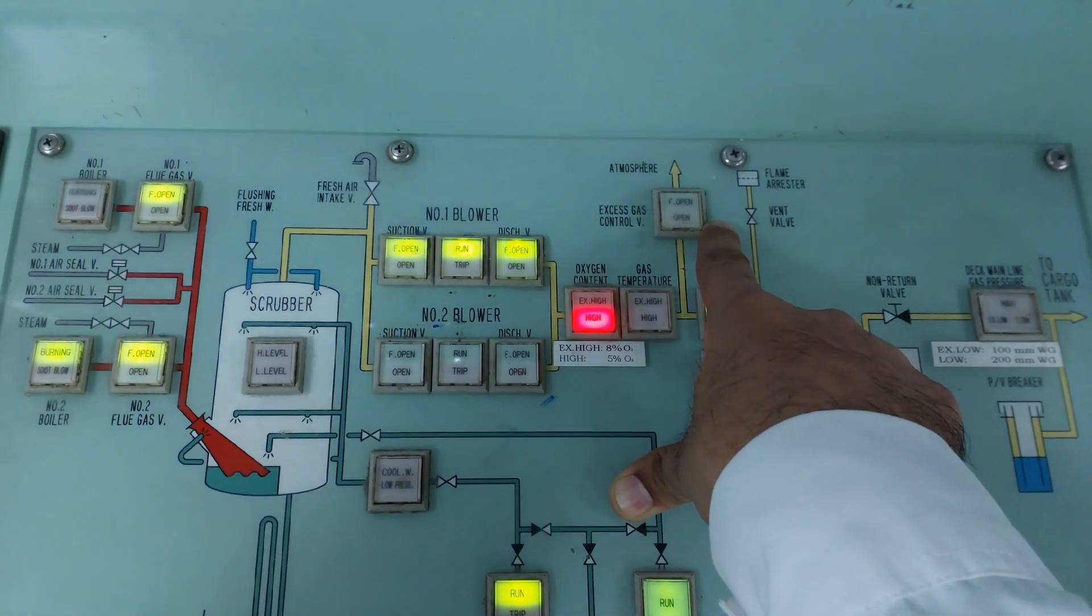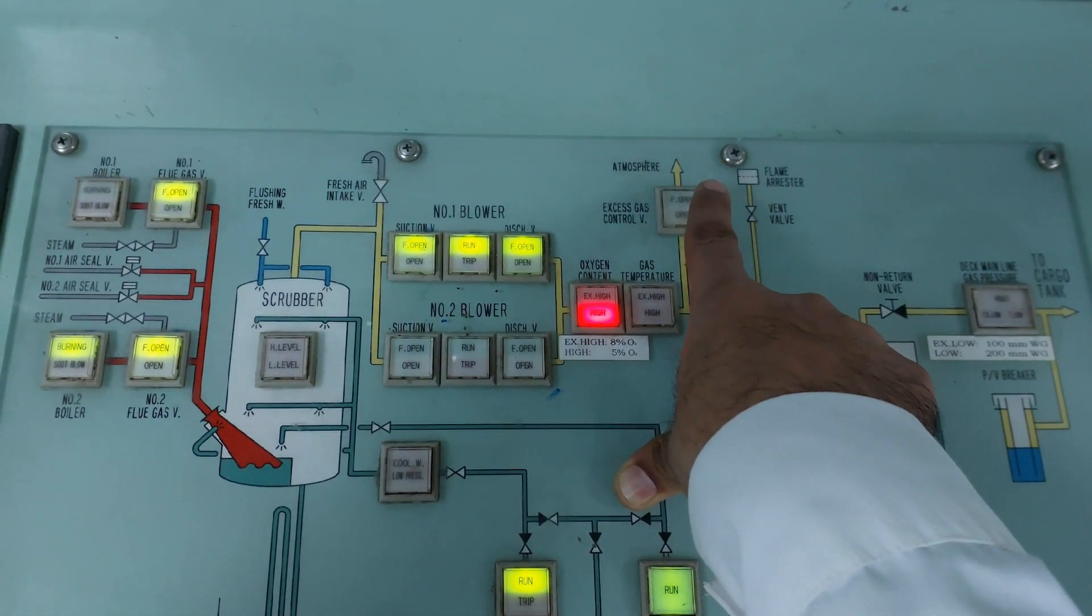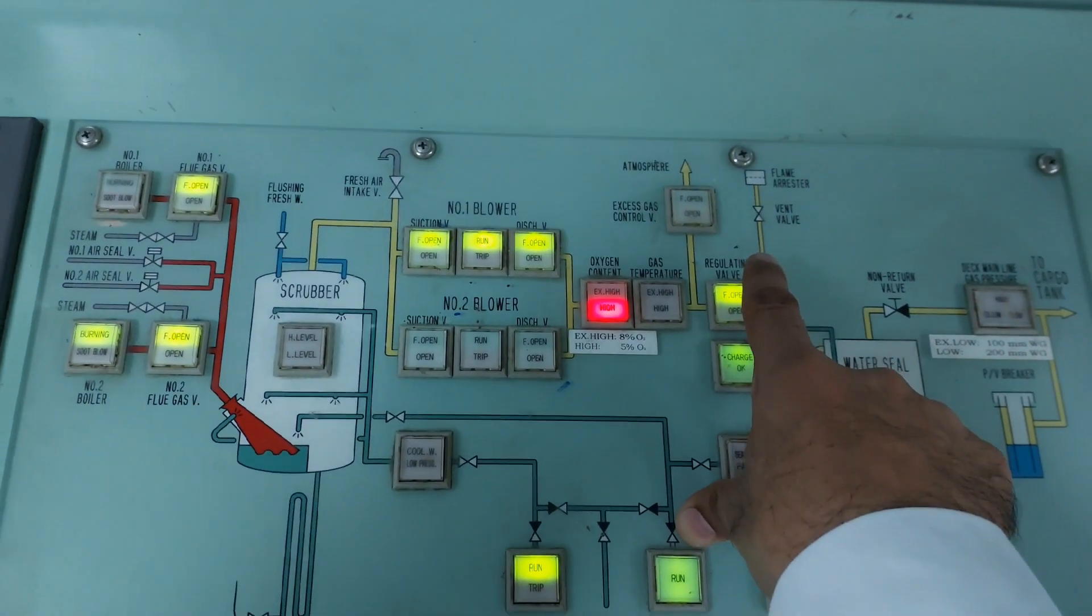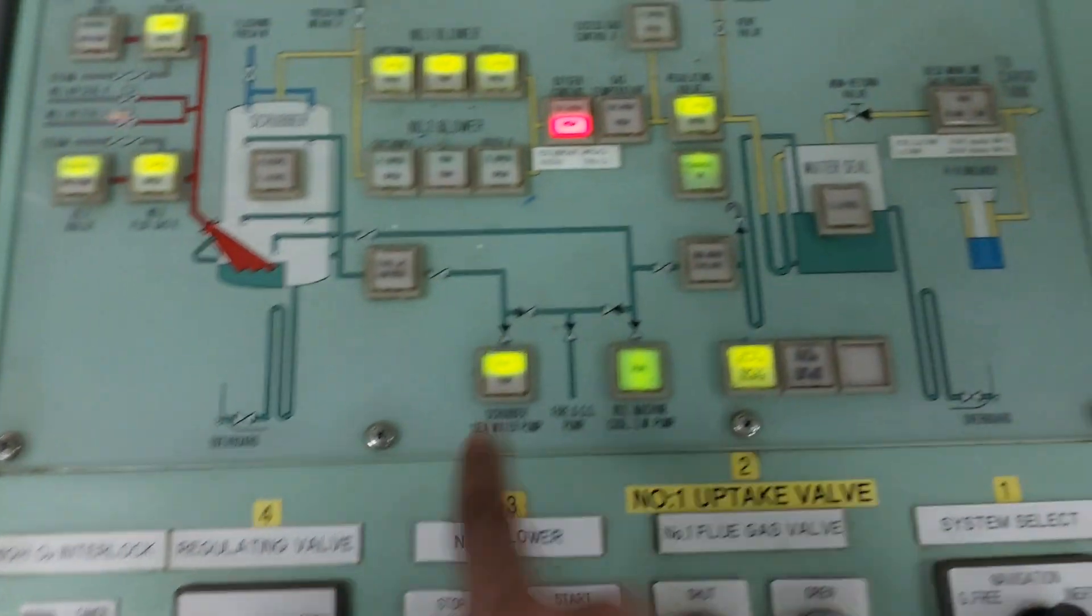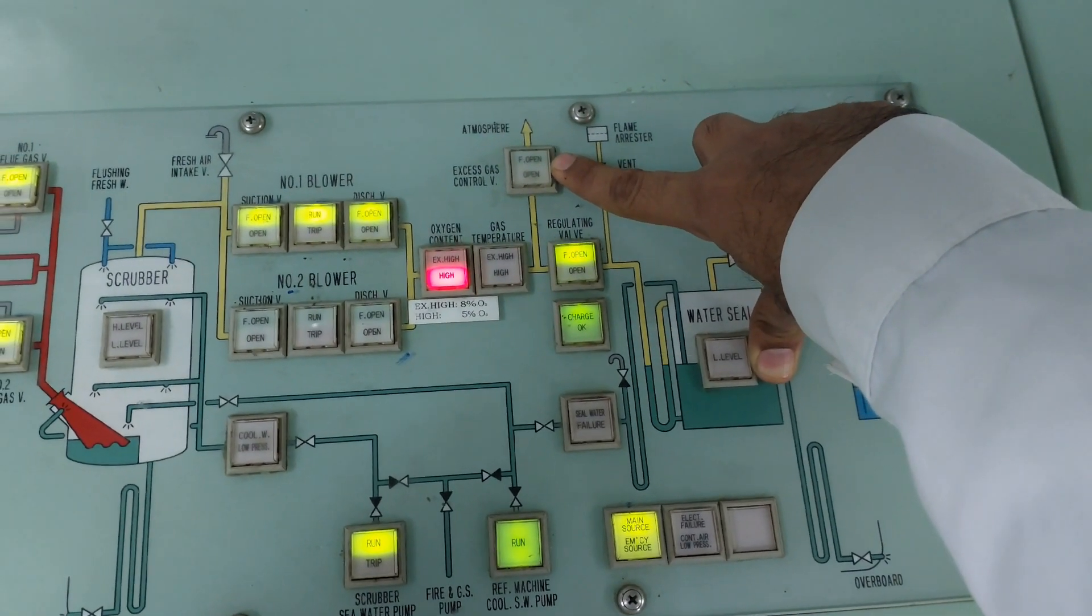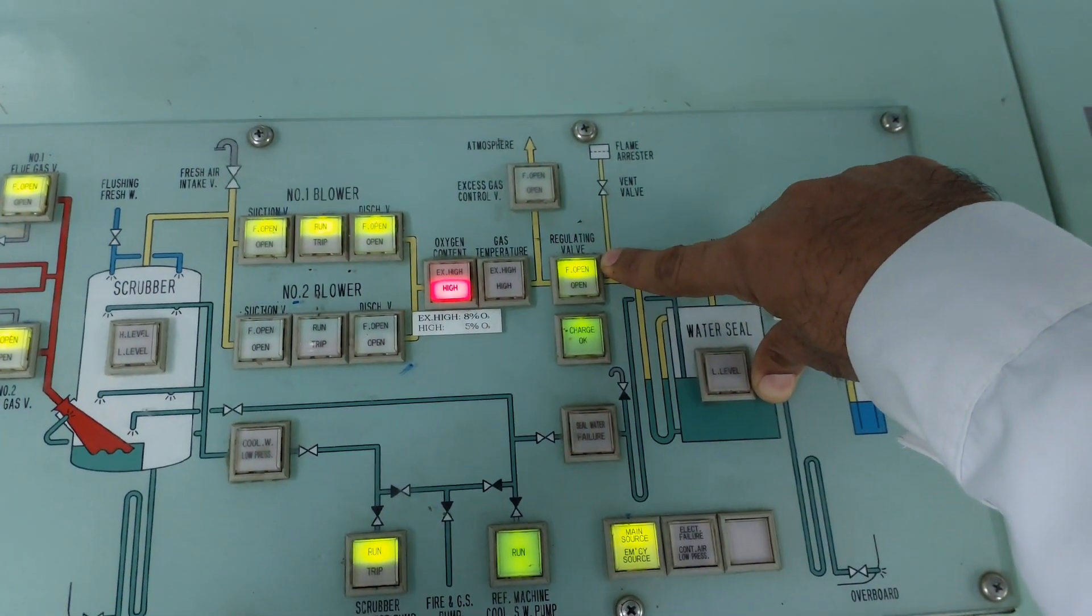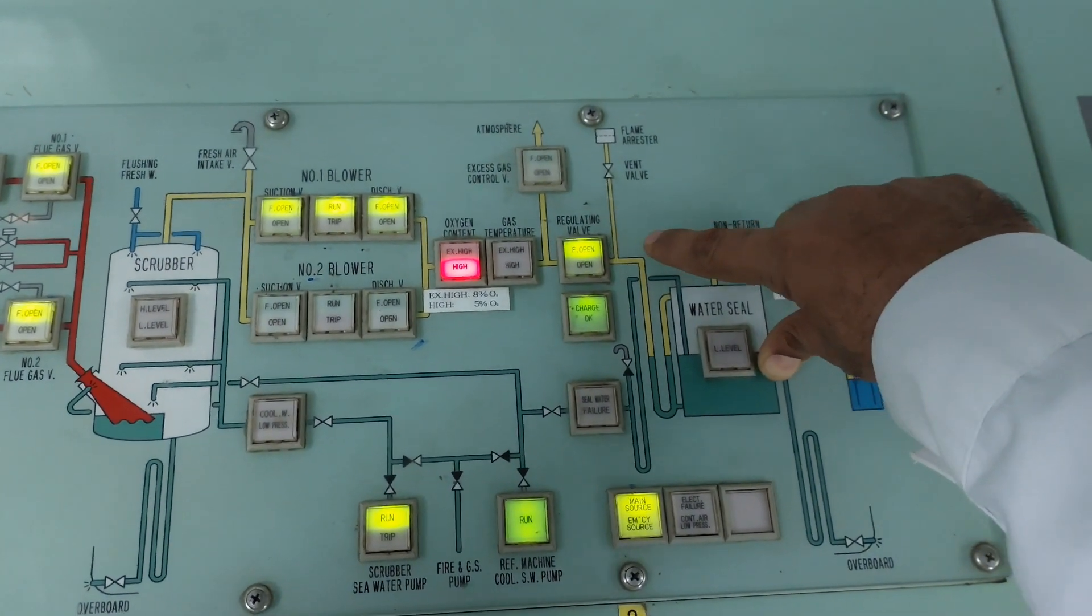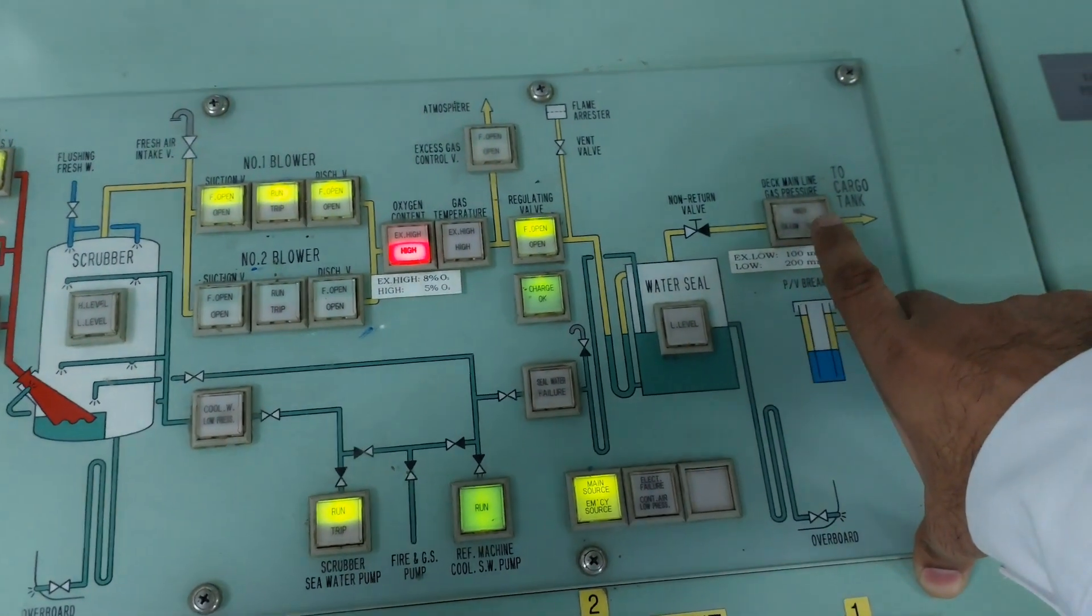There are two valves: one is this excess gas control valve. If you open this, the IG will go to atmosphere. If you close this, the IG will go to tank systems. Here you open this regulating valve. You have closed this atmosphere or excess gas control valve shut. This regulating valve is open. After that, the IG will go to deck seal. You have already opened this IG isolation valve and non-return valve.